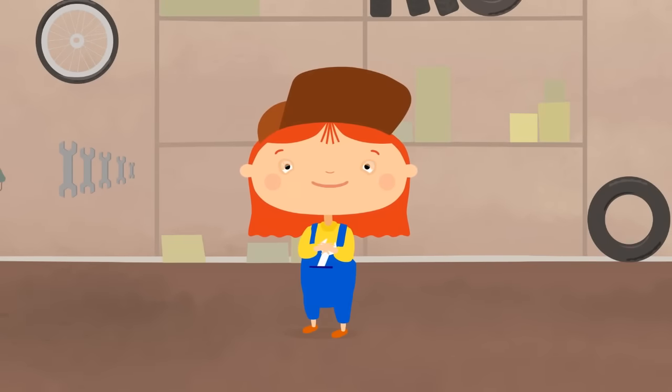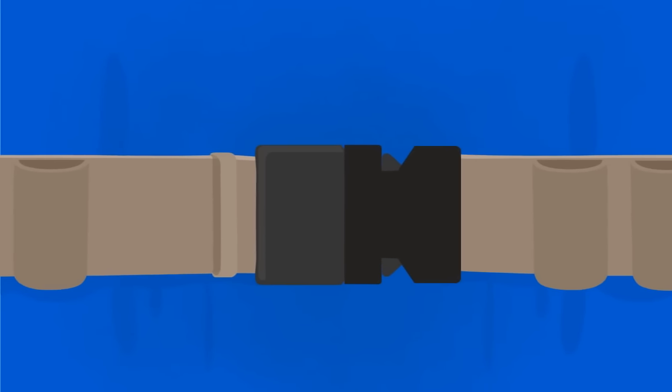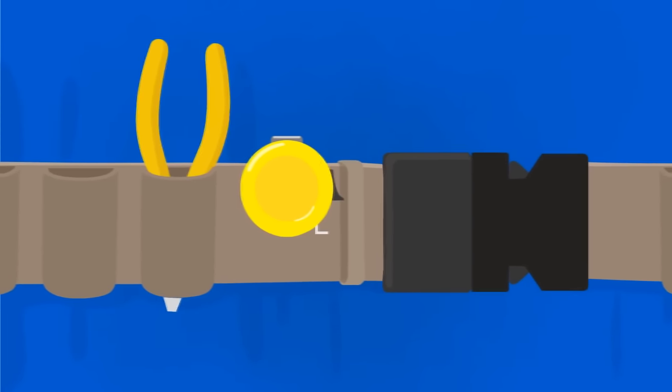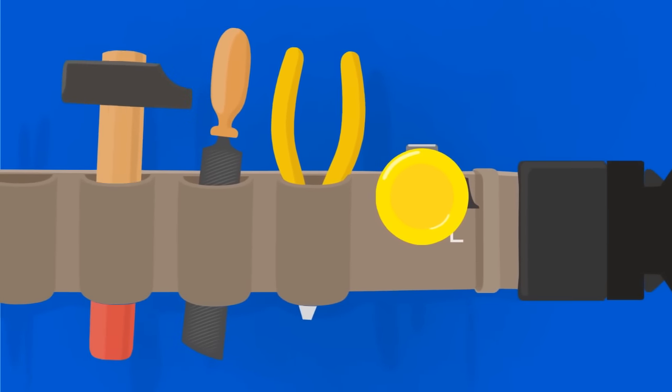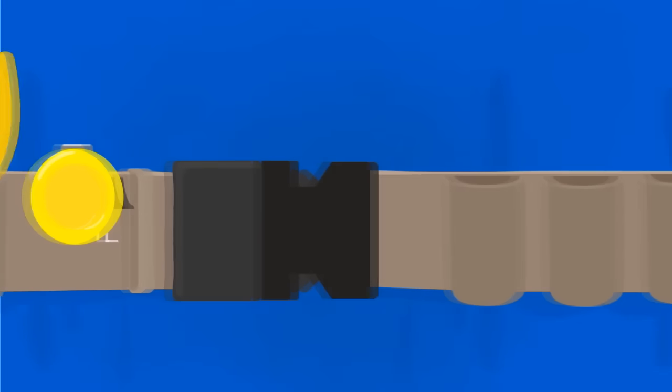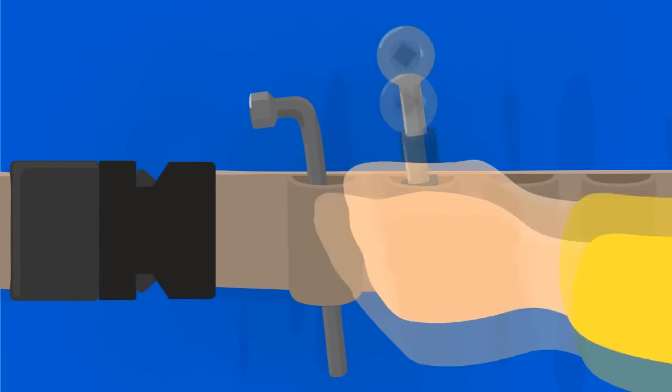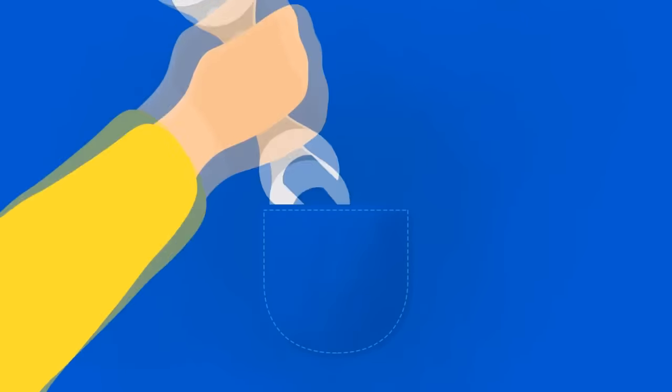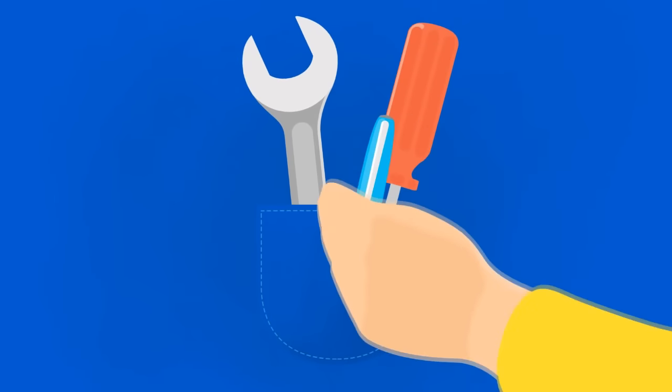But first she needs to collect her tools. Dr. McWheely puts them in a special belt. A tape measure, pliers, a file, a hammer, a wheel spanner, a ratchet key, a spanner, a screwdriver, and a pen to write with.